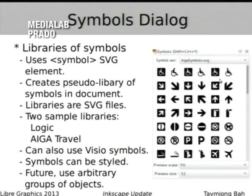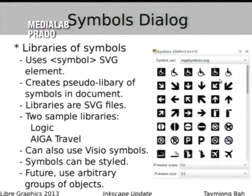There's a new symbol dialog. Symbols in SVG are defined by a symbol element, and Inkscape will go through a document, create a pseudo-library of all existing symbols being used, and present them to you. You can also have libraries of symbols in an SVG file — drop them in the right folder and they appear in the dialog. There are two sample libraries: a logic library and travel symbols. You can also use Visio symbol files, and in the future possibly use arbitrary groups in Inkscape as symbols.